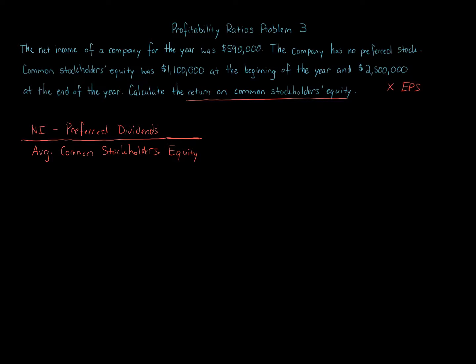So that is our formula. Let's go through this and calculate it. We're given net income. Our net income for the year was $590,000. Let's start there. We're going to subtract away preferred dividends. Do we have any preferred dividends? No, the company has no preferred stock. So that equals a numerator of $590,000.